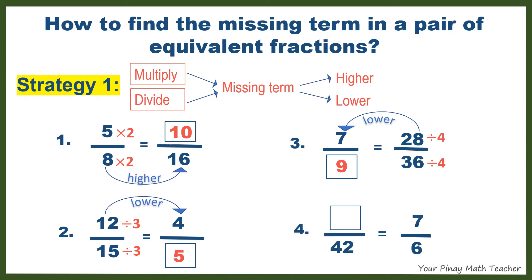Number 4. Blank over 42 is equal to 7 sixths. Again, the complete term fraction is on the right. 6 gets higher to 42. Therefore, it follows that you have to multiply 6 by a certain number, which is 7, to get 42. Do the same with the numerator 7. So the missing term is 49.